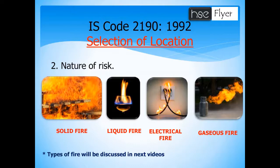The classification of fire types will be discussed in the next videos as per the standard. Initially, for identifying the location, you should always think about the nature of risk. For example, if there is an oil fire, we should not place a water-type fire extinguisher there. Based on suitability, we should always place the appropriate fire extinguisher.